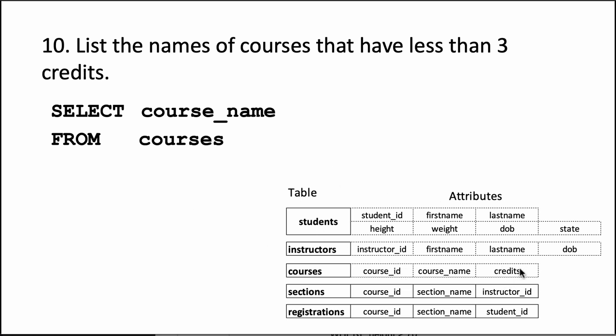The name of the column is credits, so we can now say WHERE credits less than 3. Since it's a numeric column and we're talking about a value in a numeric column, we don't put quotes. This is question number 10.